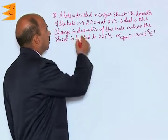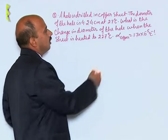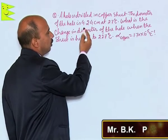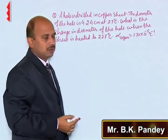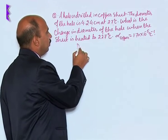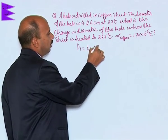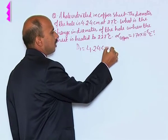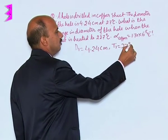Now, say in this example, a hole is drilled in copper sheet. The diameter of the hole is 4.24 centimeter at 27 degree Celsius. It means you are given D1 is equal to 4.24 centimeter and T1 is equal to 27 degree Celsius.